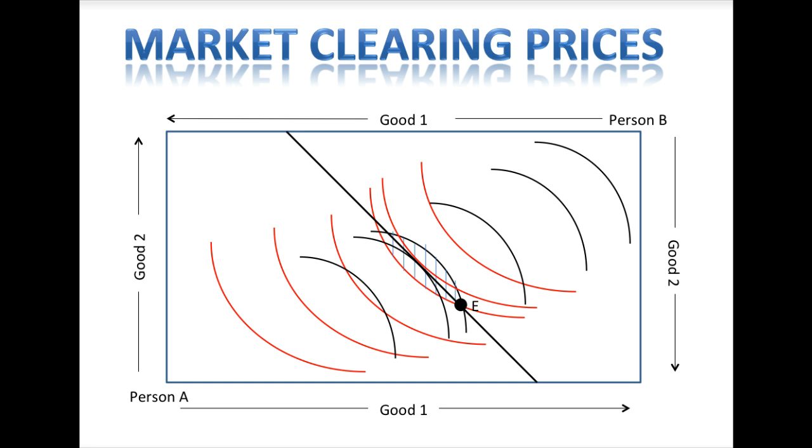This lesson has presented a graphical illustration of how to find the equilibrium outcome in two markets simultaneously. Next time in class, we will learn how to apply Walras Law to algebraically solve for the equilibrium outcome and practice with a simple example.